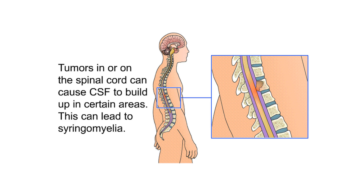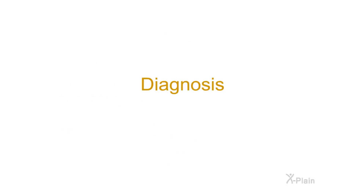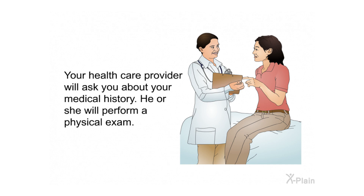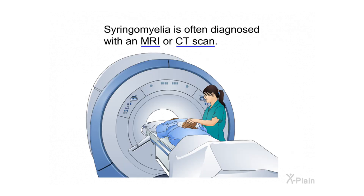Tumors in or on the spinal cord can cause CSF to build up in certain areas, leading to syringomyelia. For diagnosis, your health care provider will ask about your medical history and perform a physical exam. Syringomyelia is often diagnosed with an MRI or CT scan.